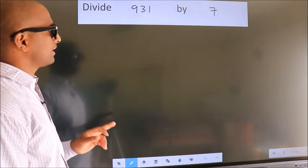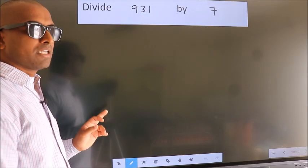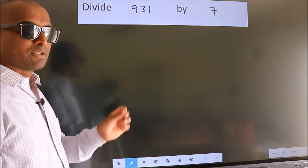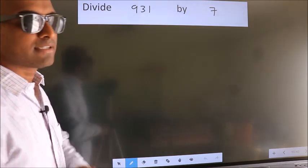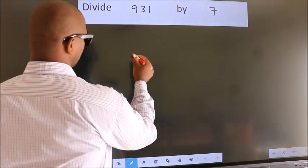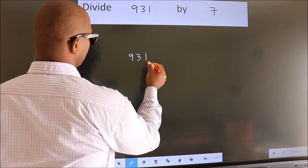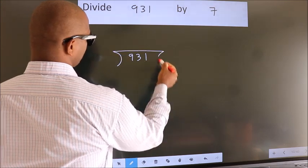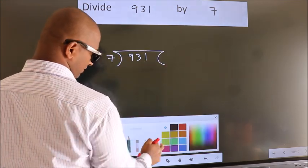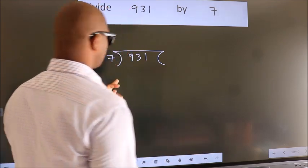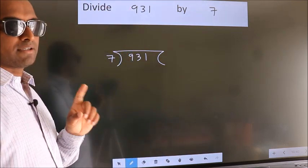Divide 931 by 7. To do this division, we should frame it in this way. 931 here, 7 here. This is your step 1.